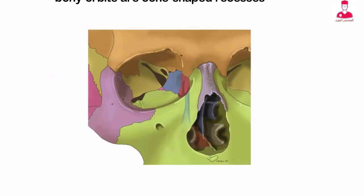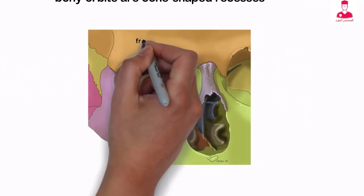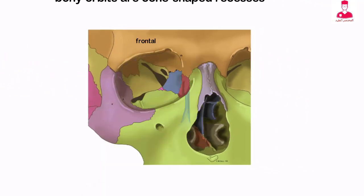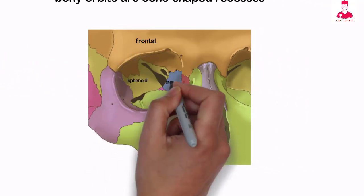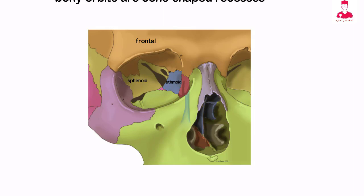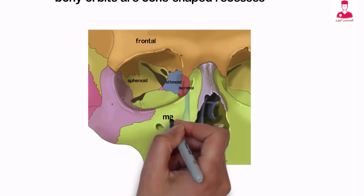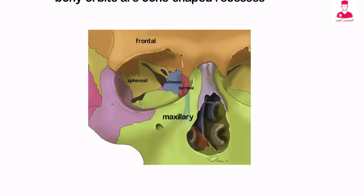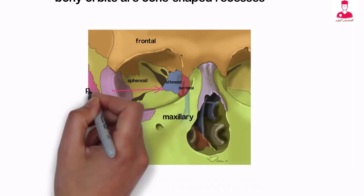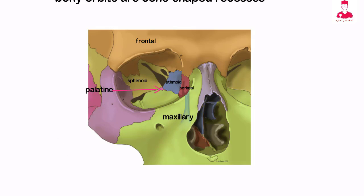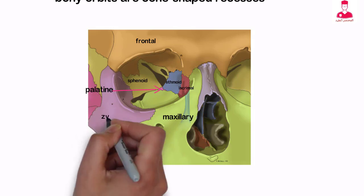The junction of the frontal, sphenoid, and ethmoid bones of the cranium and the lacrimal, maxillary, palatine, and zygomatic bones of the face forms the orbit.